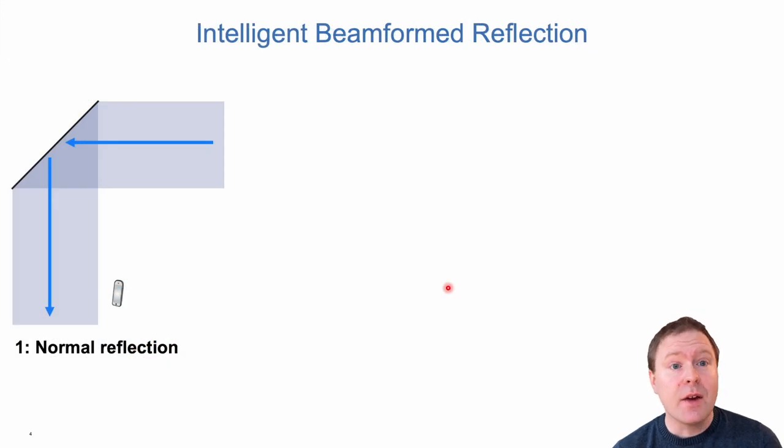To understand how this intelligent beamformed reflection is working, let's look at the basics of reflections. Normally when you have a flat surface like this, the signal comes in from a certain direction and it gets reflected in a predetermined direction. The incident angle and the outgoing angle is the same. If I'm here as a user device, this signal will not reach me.